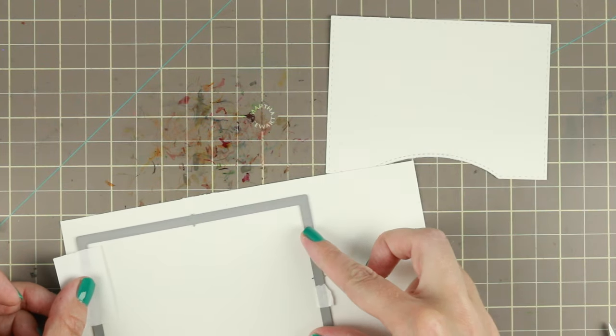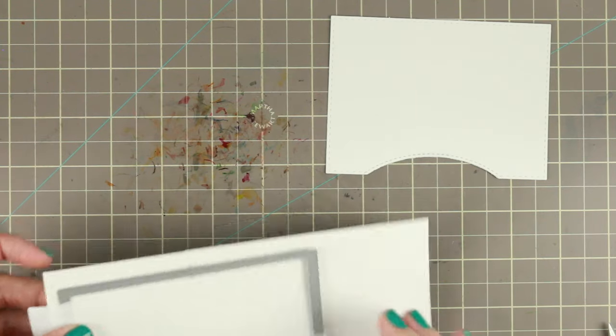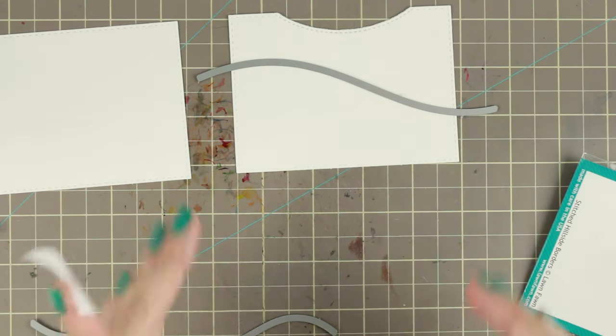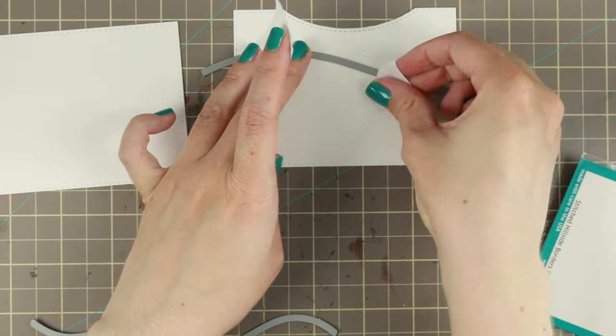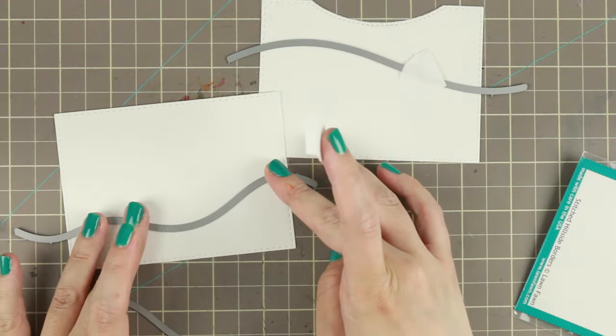For the background, I want to make a scene and I'm using up some pieces of my Canson watercolor because watercolor cardstock is expensive and you want to use up everything. So I'm using up some pieces of it because I knew that I wanted to have three pieces, three sky and two hills.